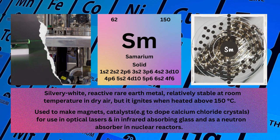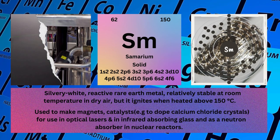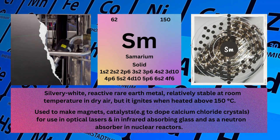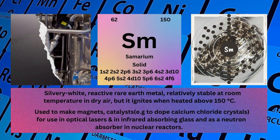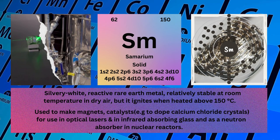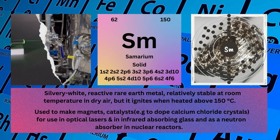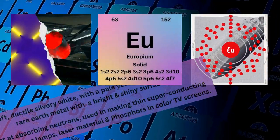Samarium is used to make magnets, catalysts, for example to dope calcium chloride crystals, for use in optical lasers, in infrared absorbing glass, and as a neutron absorber in nuclear reactors.